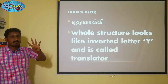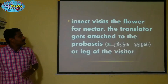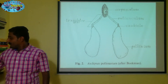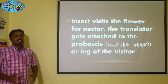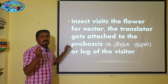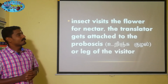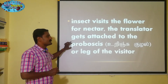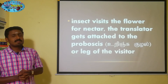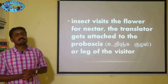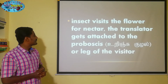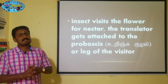Four definitions. One insect is entering into the flower of the Calotropis. On the translator, on the corpusculum, on the proboscis or leg — the corpusculum is of a sticky nature present in the polyneum, and that corpusculum attaches or sticks to the proboscis or leg of the insect visitor.